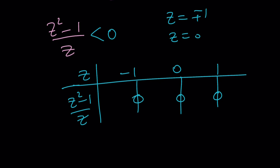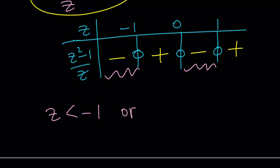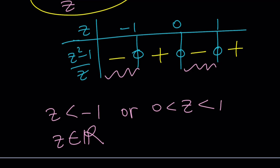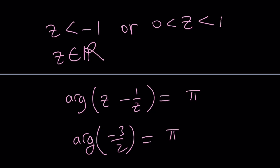The values negative one, zero, and one are the roots, and the sign changes at each. For large Z, Z squared minus 1 over Z is positive, then negative, then positive, then negative. We want the expression less than zero, so we need Z less than negative one or Z between zero and one. Of course Z is a real number. For example, Z equals one half: one half minus 1 over one half equals negative three halves, and argument of negative three halves is pi since it's a negative real number.